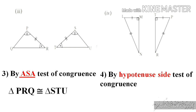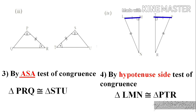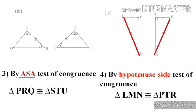In the fourth figure, with identical marking, side LM is congruent to side TP, angle M is congruent to angle T — they are right angles — and hypotenuse LN is congruent to hypotenuse PR. So by Hypotenuse Side test of congruence, triangle LMN is congruent to triangle PTR.